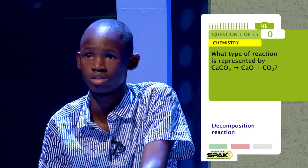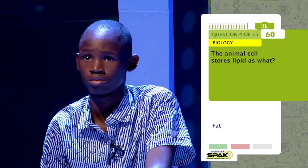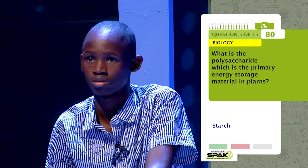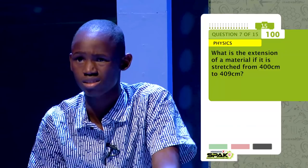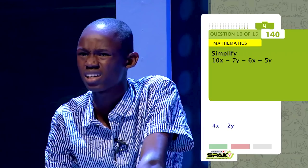Pelumi Olabi took the lead in this round as he gave correct answers back to back to almost all his questions. What type of reaction is represented by CaCO3 → CaO + CO2? Decomposition. The chemical reaction that absorbs heat from its environment is termed as what? Endothermic. Animal cells store lipid as what? Fats. What is the polysaccharide which is the primary energy storage material in plants? Starch. The force that causes the surface of a liquid to contract is? Surface tension. Simplify 10X minus 7Y minus 6X plus 5Y. 4X minus 2Y.